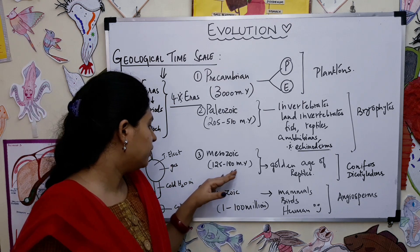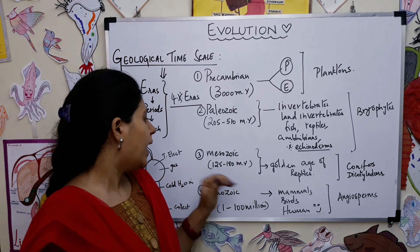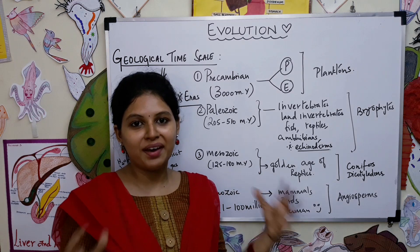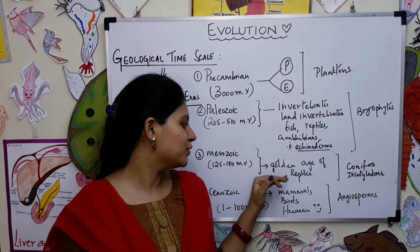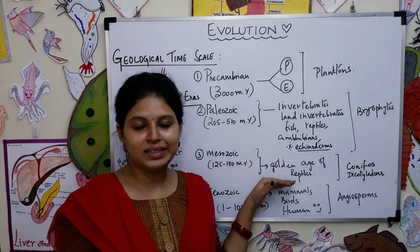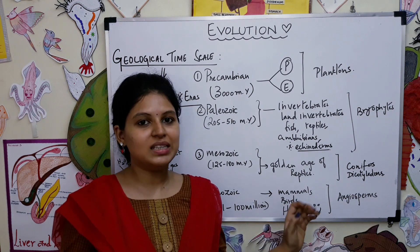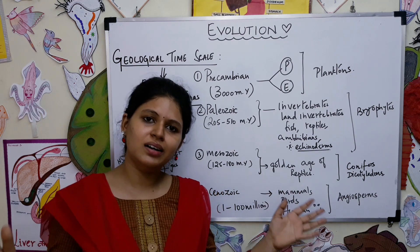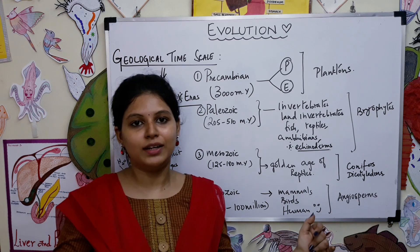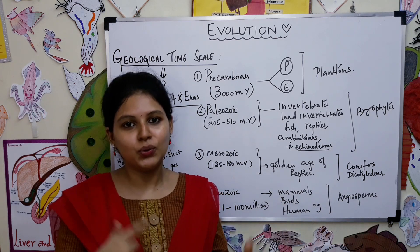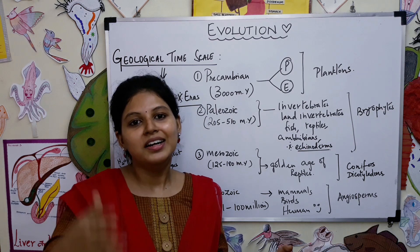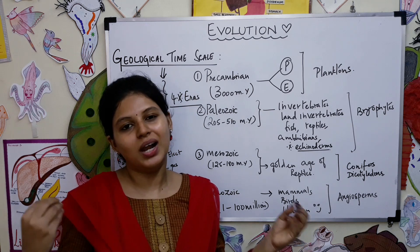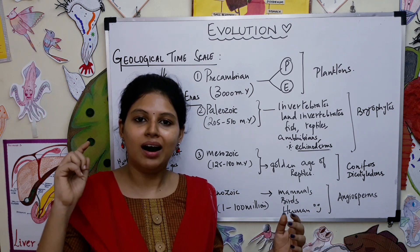The third is the Mesozoic era, meaning the middle era, ranging from about 125 to 180 million years ago. This era is called the golden age of reptiles. Dinosaurs came into existence in the Mesozoic era — including Tyrannosaurus rex and many other species. Despite looking scary and terrifying, these were actually quite docile organisms.